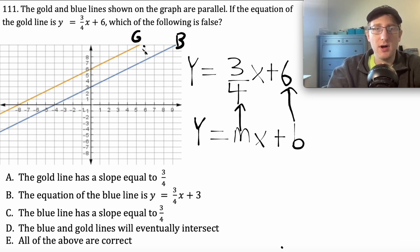These two lines are parallel, so parallel lines have the same slope. That's the first thing I want you to know about parallel lines. Both of these lines are going to have the same slope because they're parallel lines. So if the slope of the gold line is 3 over 4, the slope for the blue line is also 3 over 4. So we know that a is correct and we know that c is correct.